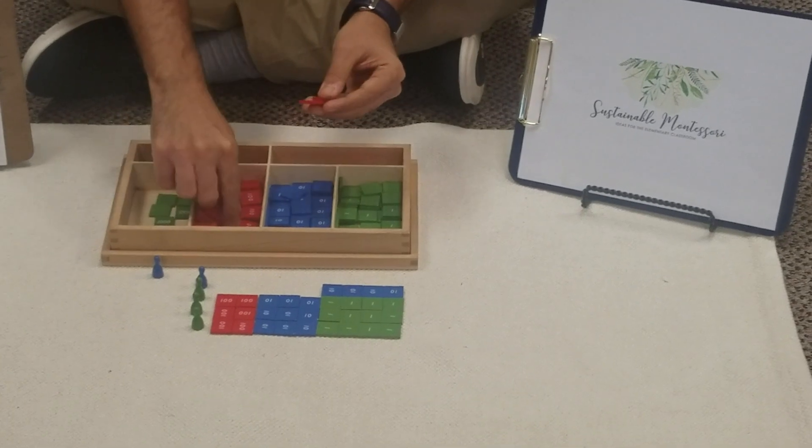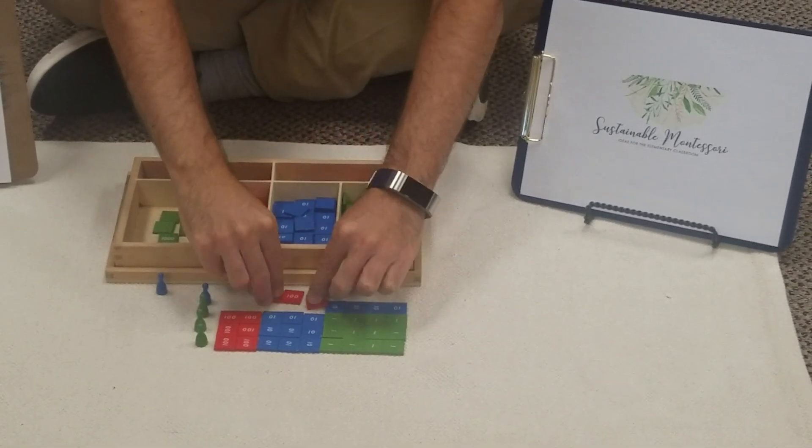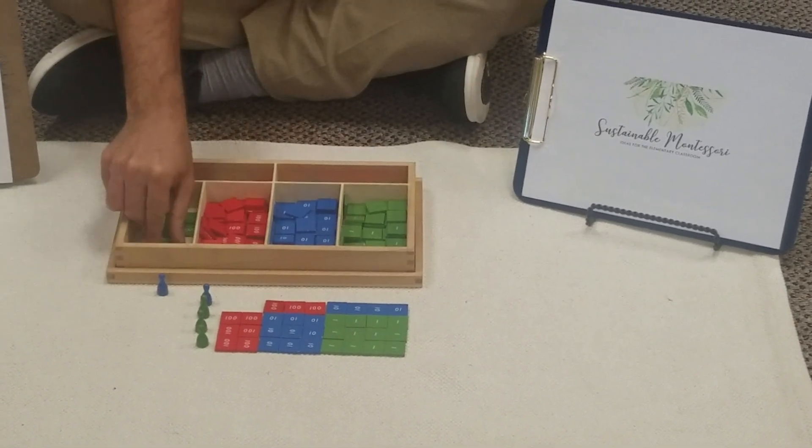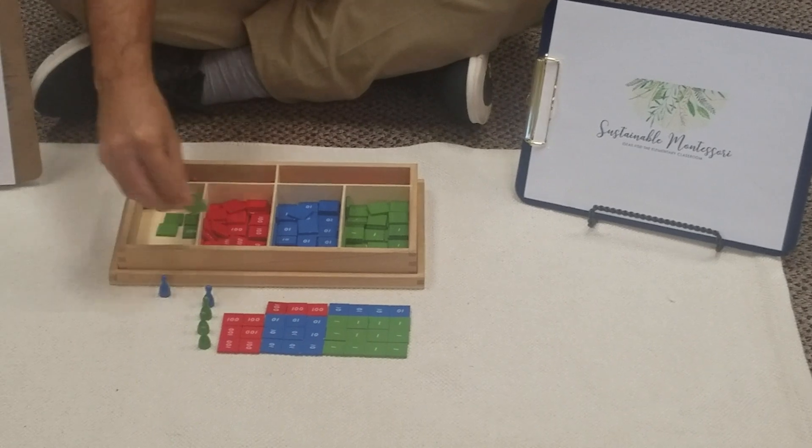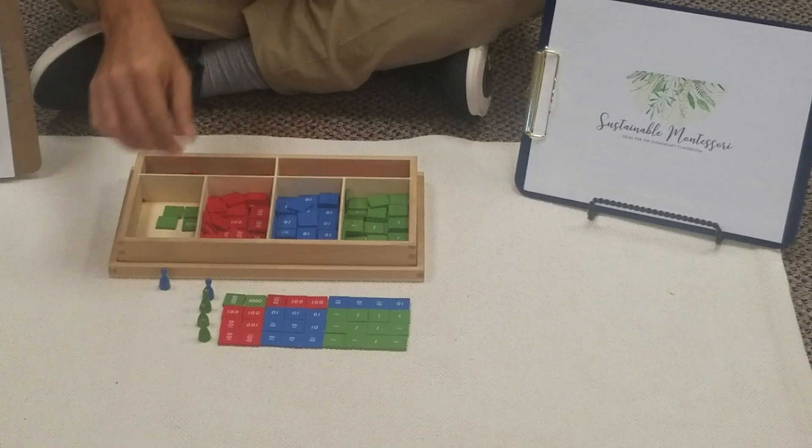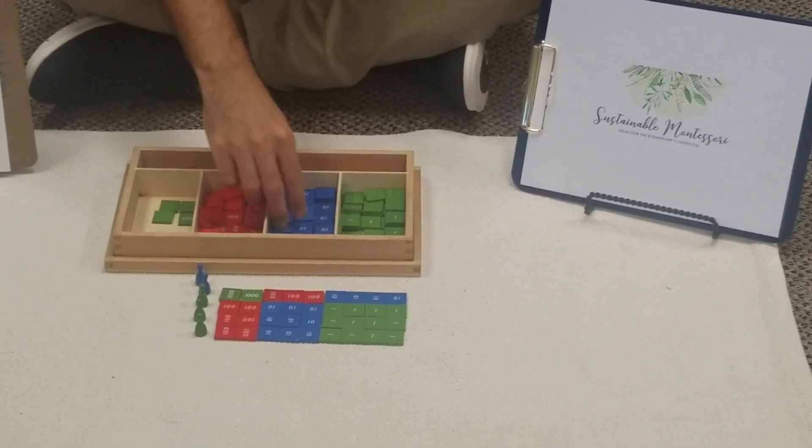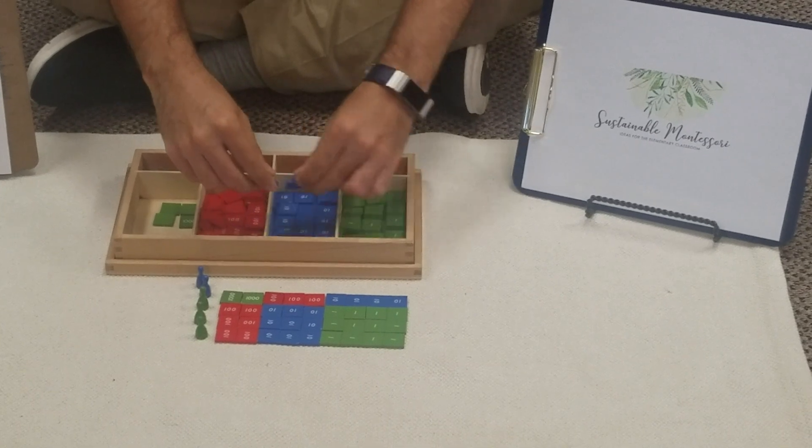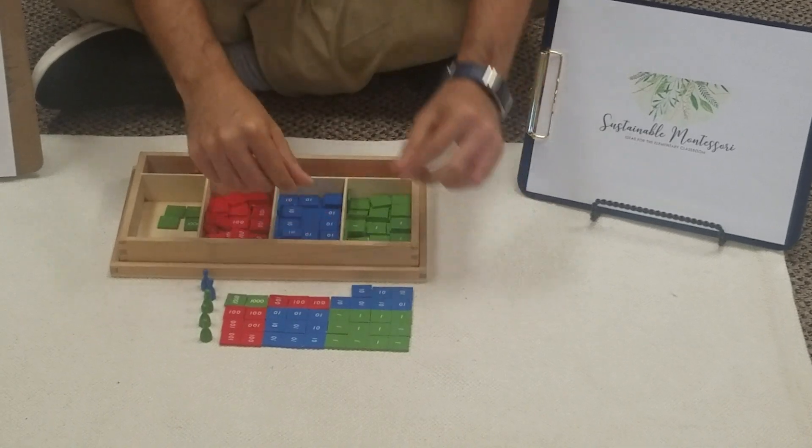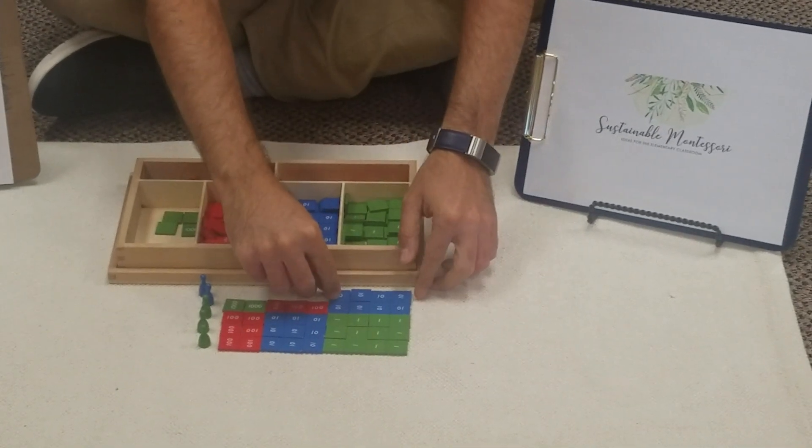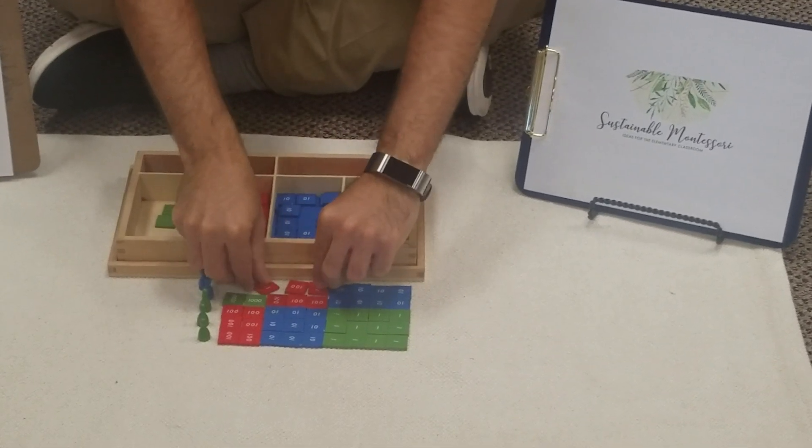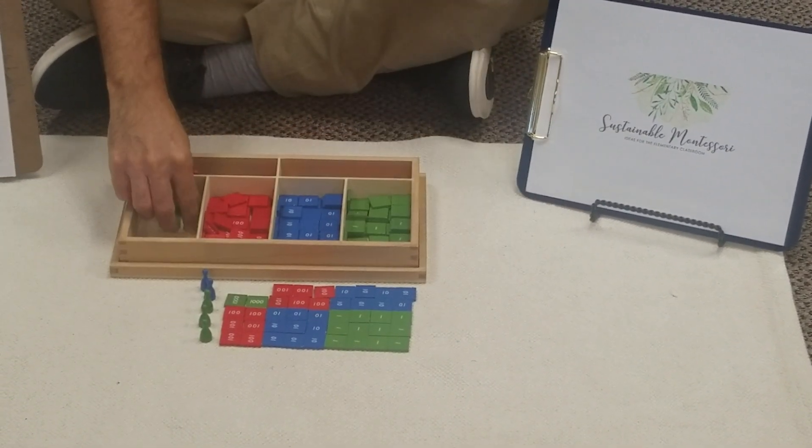Then instead of bringing tens, they're bringing hundreds. Again, because ten times a ten is a hundred. And finally, instead of bringing hundreds, they're bringing thousands. Again, because ten times a hundred is a thousand. So the next ten is going to bring exactly the same. So we have four tens, three hundreds, and two thousands.